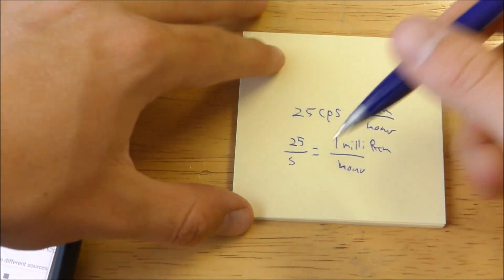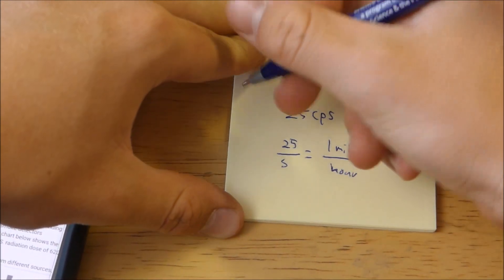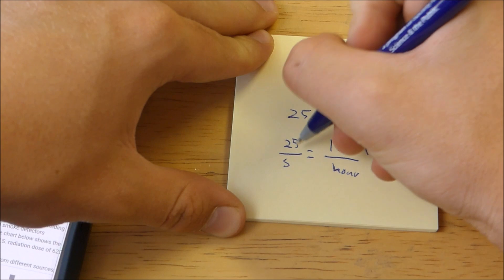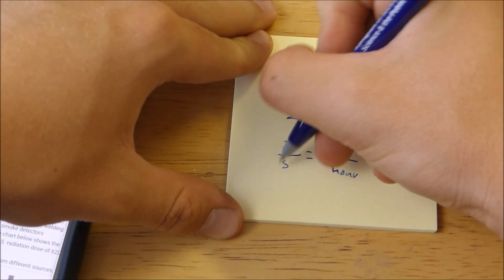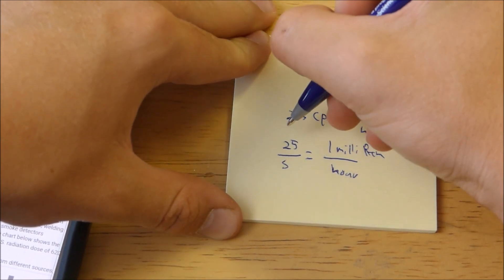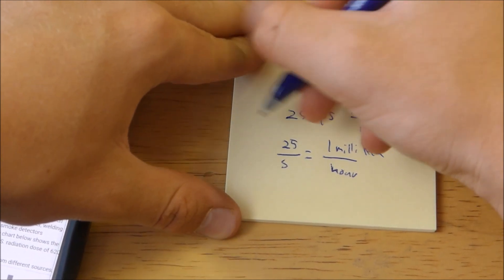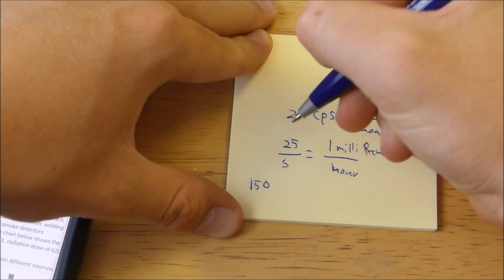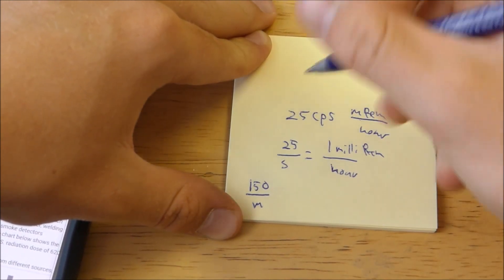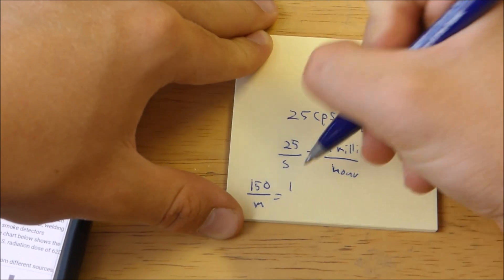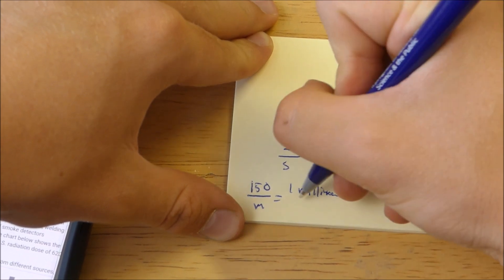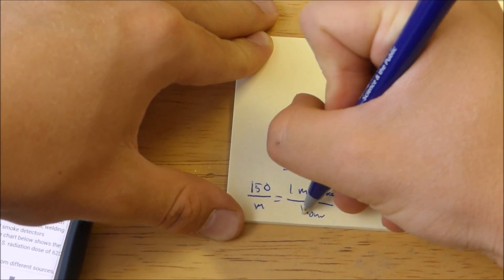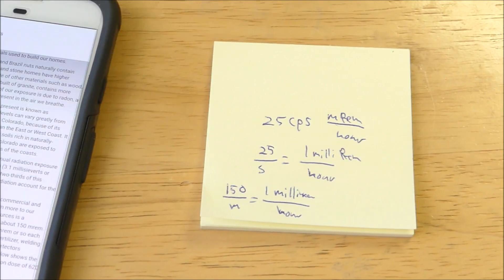So now if we do some calculations, and I'm still trying to understand this. If we have 25 counts per second, then we want to translate that to a minute. So we just multiply that by 60. And so we have 150 counts per minute equals 1 millirem per hour. So I think we should run this thing for a minute and see how that works.